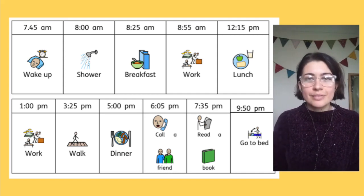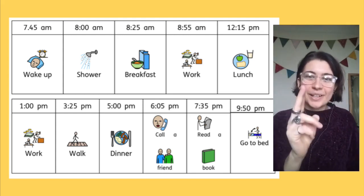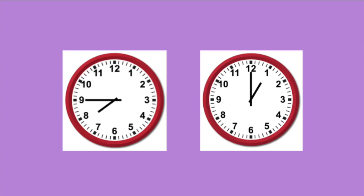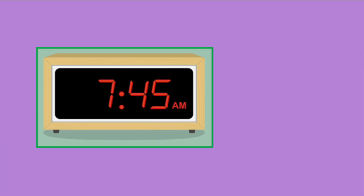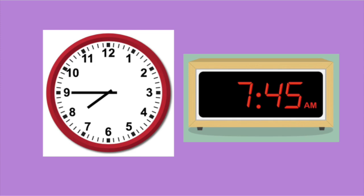But what does 7.45 look like on the clock? Let's have a look. Here are two different clocks. Which one says 7.45? Pause the video now if you need a bit more time to think. It's this one. What about the same time on a digital clock? Which one says 7.45? This one is correct. Both clocks say 7.45. At 7.45 I wake up.